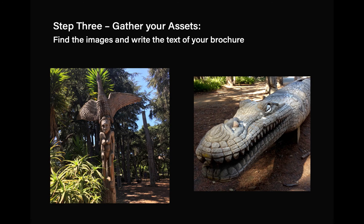Step three is to gather your assets — by assets I mean the images and the text you'll use in your brochure. I would normally encourage students to create their own content and shoot their own photos, but under the shelter-in-place order it's fine to use images found online. I went to Google Images and only searched for large images so the photos would be of reasonably high quality. You also want to write the text of your brochure in your own words — please rewrite text, don't copy and paste. Take your various source material and rewrite it consistently in your own tone.